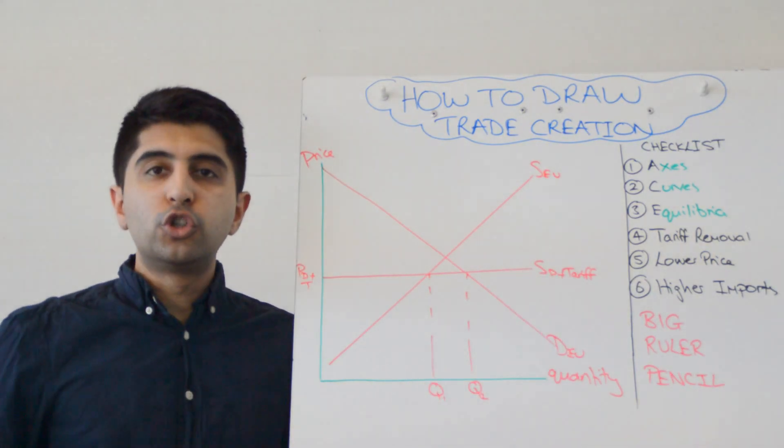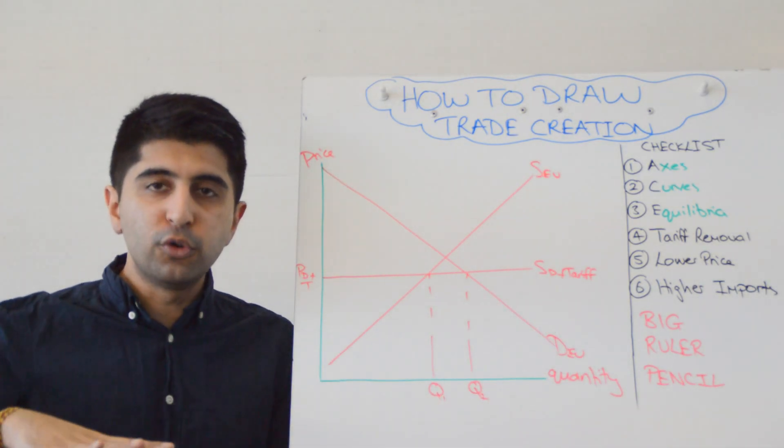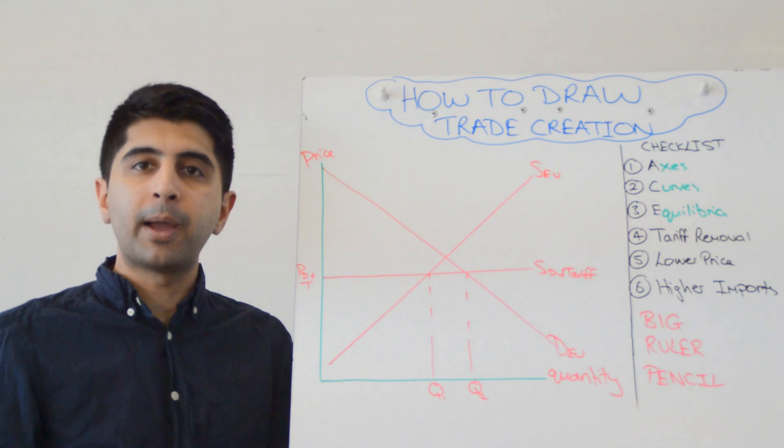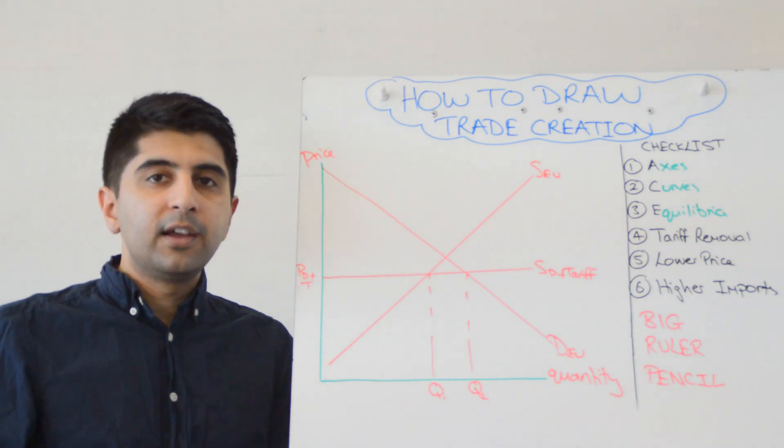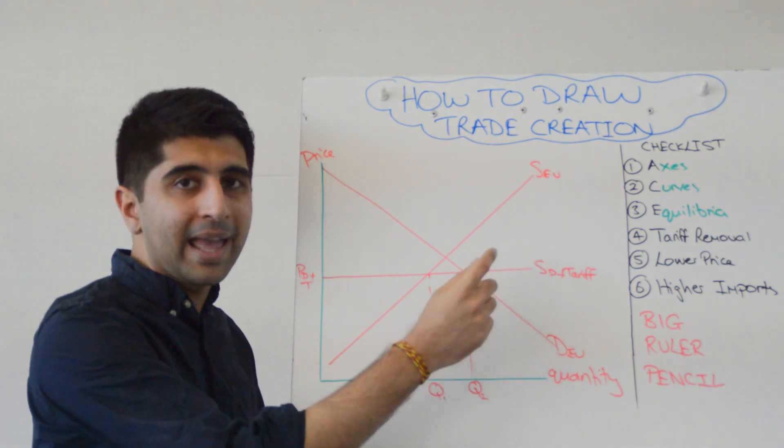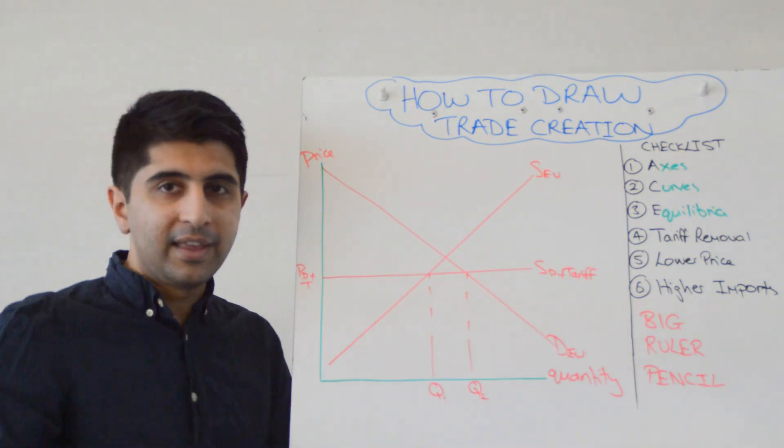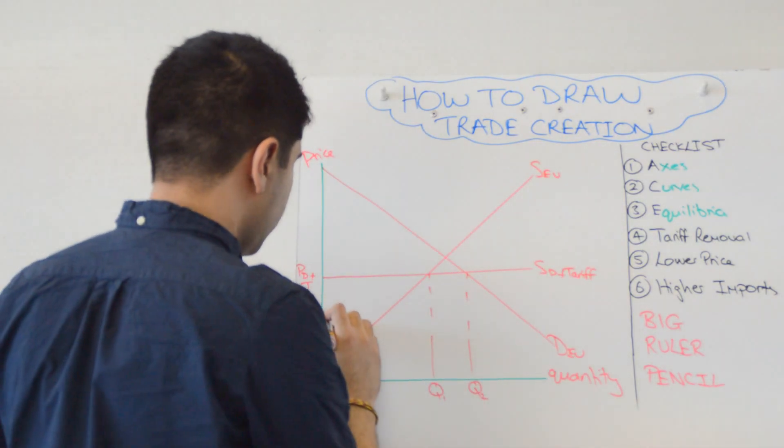Now, if this country joins the EU, what happens? Well, this tariff automatically is removed because remember what a customs union is all about. When you join it, there is now complete free trade with all member nations. So if this country enters this EU customs union, this tariff is now completely abolished, which shifts this curve downwards.